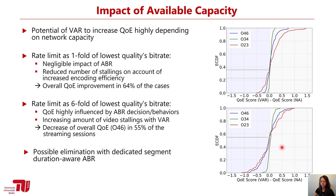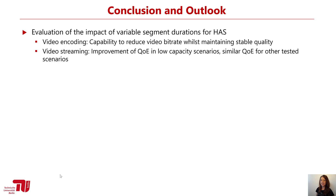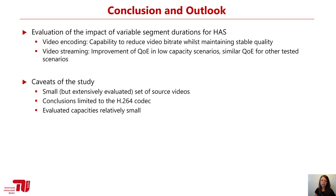In conclusion, we have evaluated the impact of variable segment durations for adaptive streaming from two perspectives. From the video encoding perspective, we are capable of reducing the video bitrate while maintaining good quality. For video streaming, we have a high potential of improving QoE especially in low capacity scenarios. The study has certain limitations: we had only four source videos, which is a small set, though extensively evaluated. Our conclusions are also limited to the H.264 codec, though the ability to save I-frames is codec-independent, suggesting high potential for codecs like H.265 or VP9.